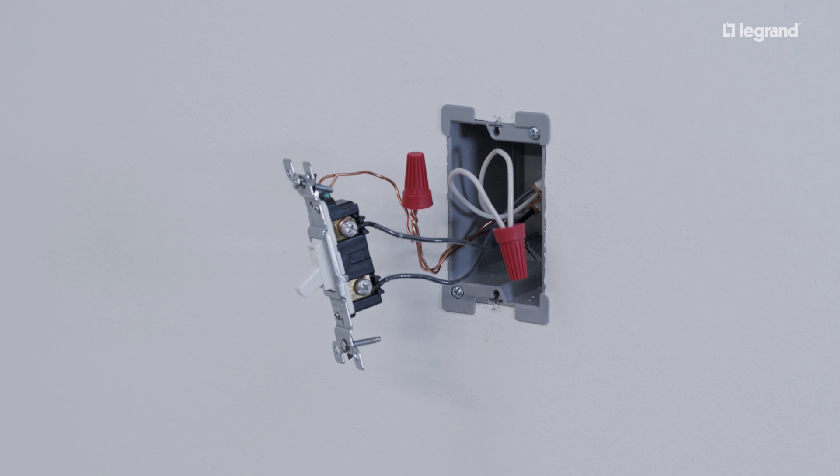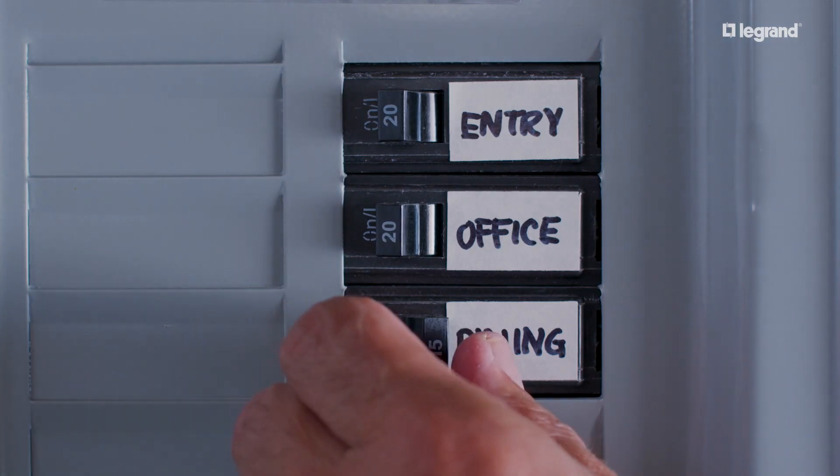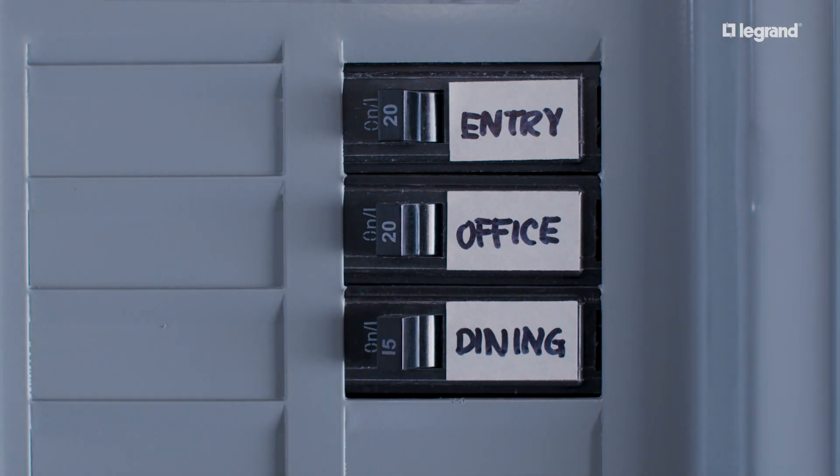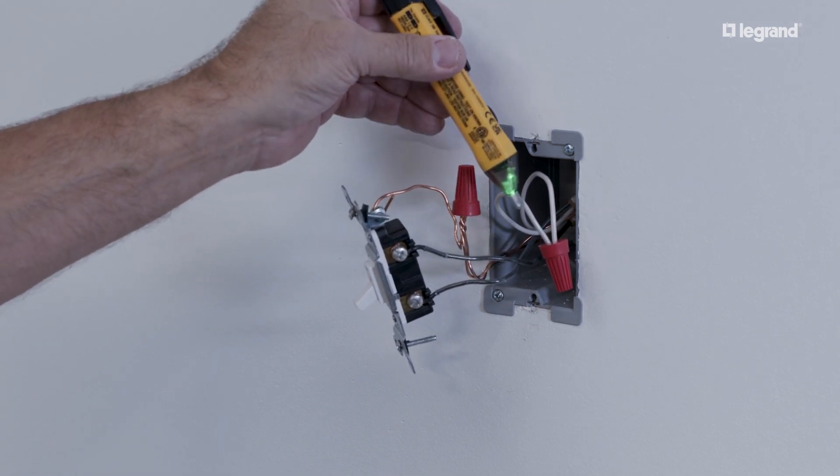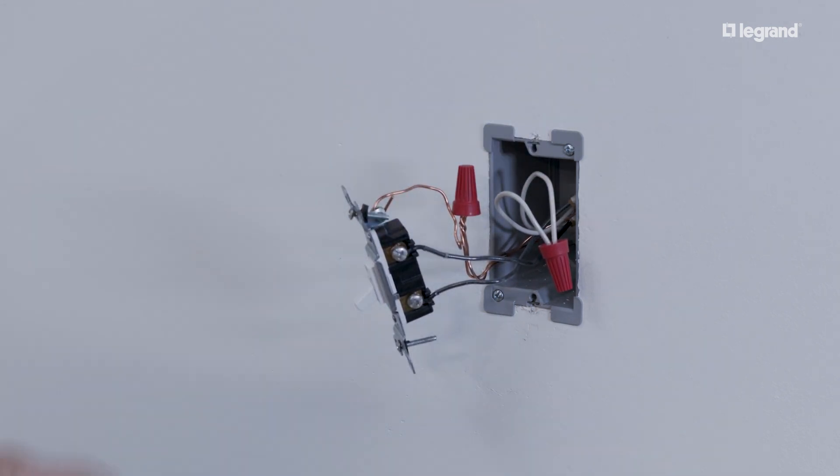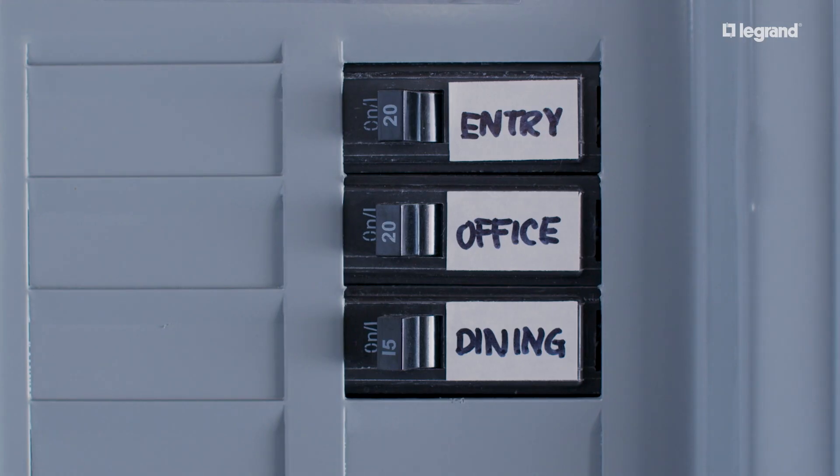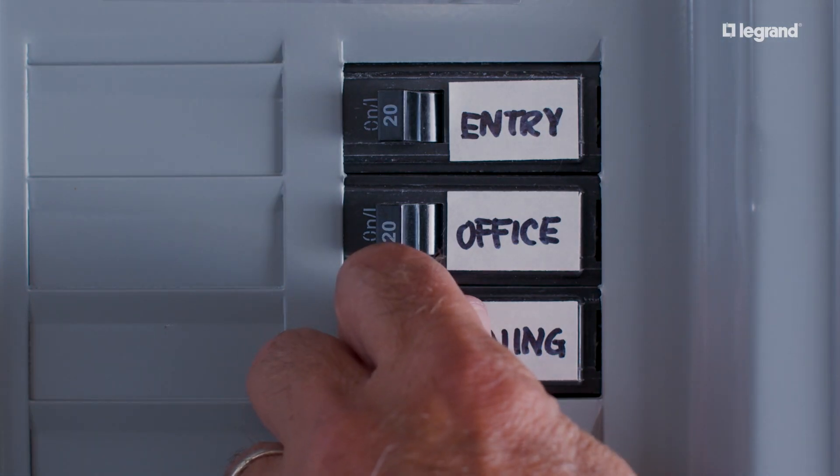If you are unsure which wire is the hot wire, you can determine it with a voltage tester. Turn the power back on at the circuit breaker and use a voltage tester on each wire. The wire with no power is the load wire and the wire with power is your hot wire. Once confirmed which wires are which, ensure power is off at the breaker.